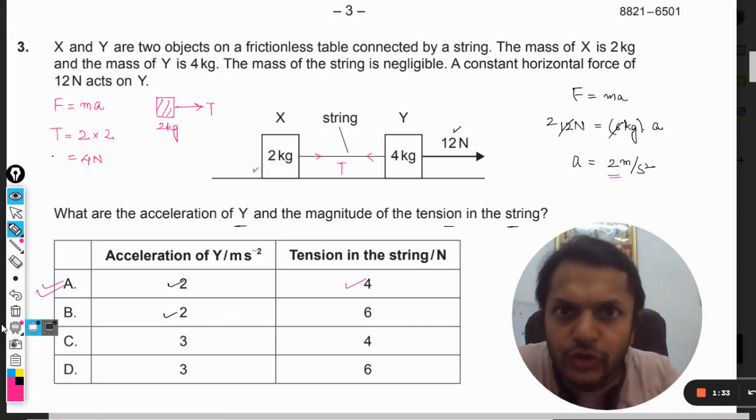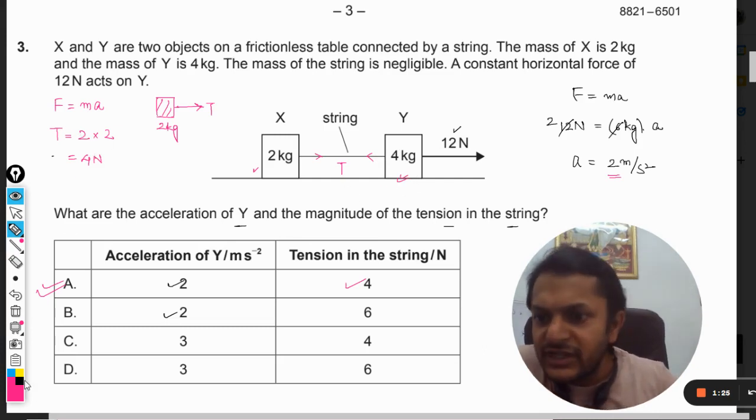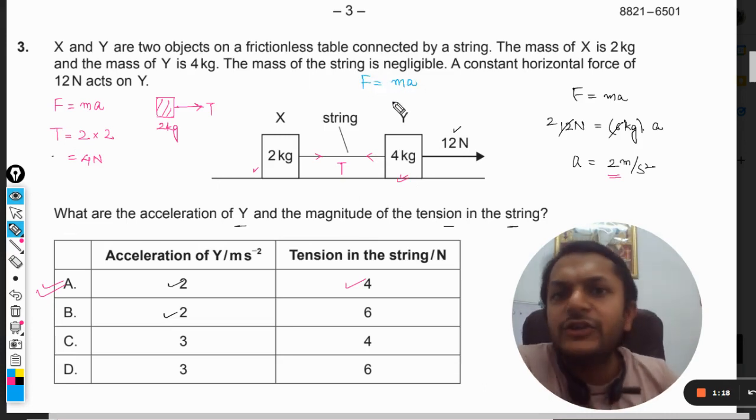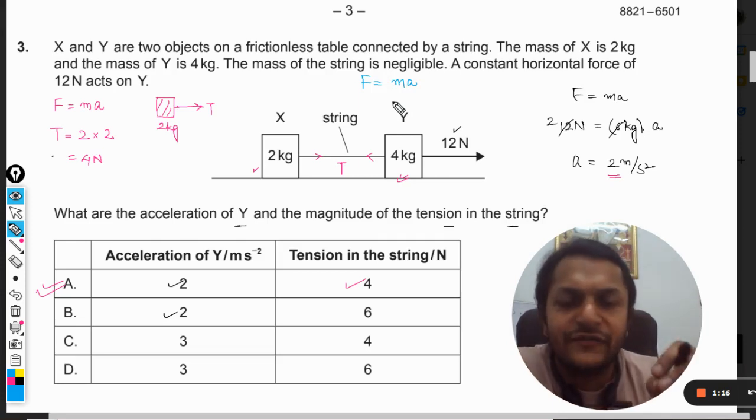But there is one more thing that I want to show you. In this question, what about this? If we consider 4 kg instead of 2 kg, what will be the equation and how are we going to solve it? Again, F is equal to m into a. Can you tell me what will be the total force, the net force that will be acting on 4 kg?